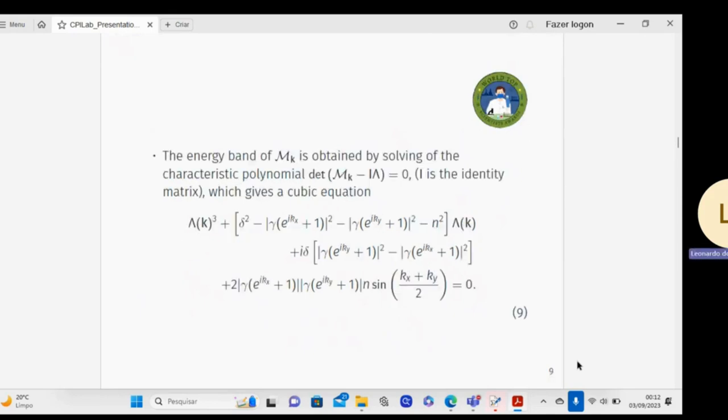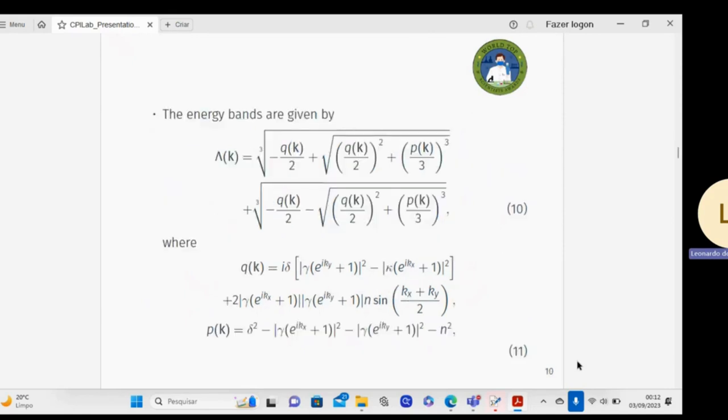In this case, the energy bands of the matrix are obtained by solving a characteristic polynomial equation, which gives a cubic equation that depends on the non-Hermitian parameters, where the solution is given by equation 10, where kp depends on the non-Hermitian parameters.